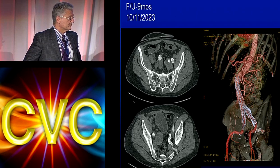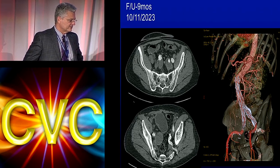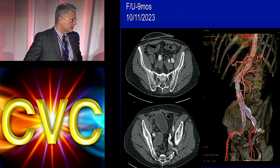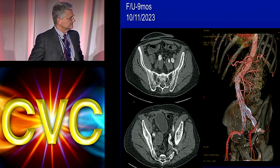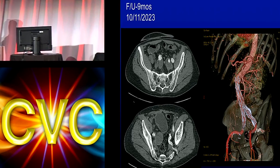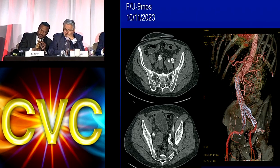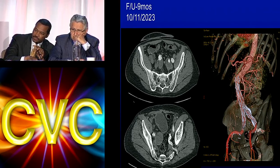Post-procedure, there was no leak and everything looked good. On follow-up at nine months, the snorkel is well-perfused and all aneurysms are fixed. We covered the right internal iliac artery and snorkeled the left. Dr. Jones agreed with the approach — both the selection of the Endologix bifurcated endoprosthesis and the use of Viabahn given the length and tortuosity of that hypogastric.